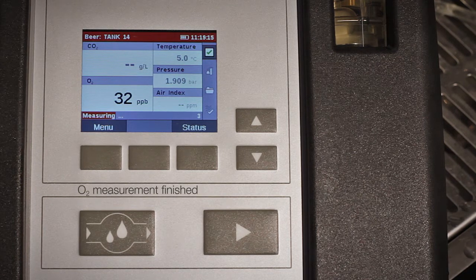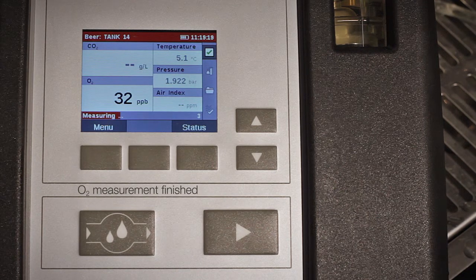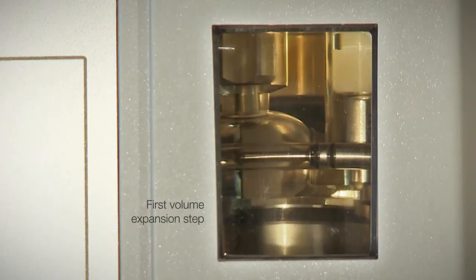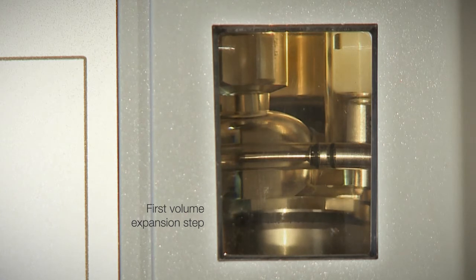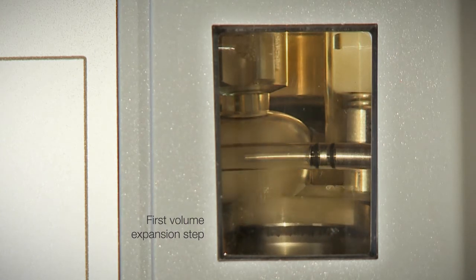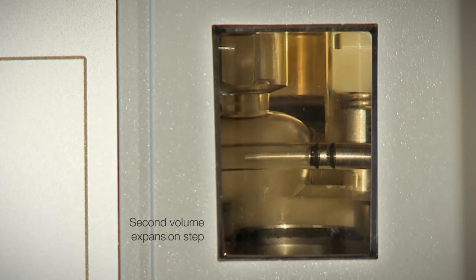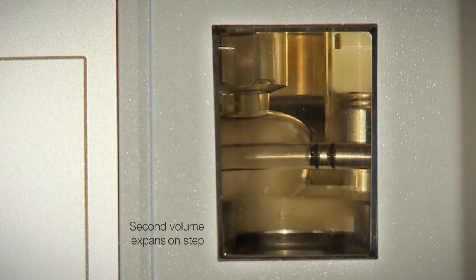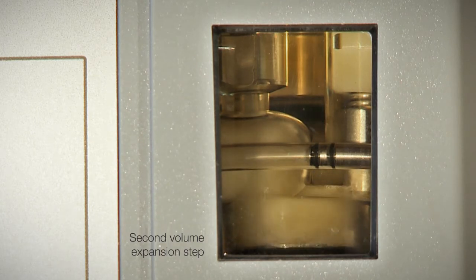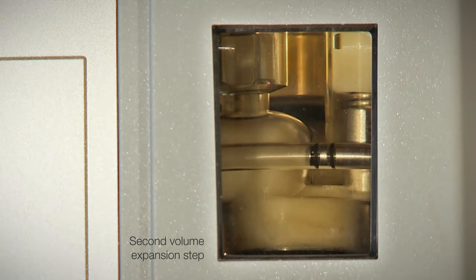As a first step, the O2 measurement is performed. After that, the CO2 measuring chamber is closed. The piston moves down and expands the volume for the first time. The pressure and temperature are measured. Then the piston moves down further and the volume is expanded a second time. The pressure and temperature are measured once again.